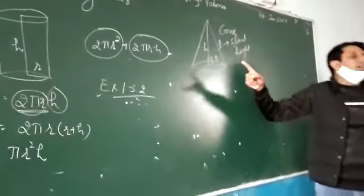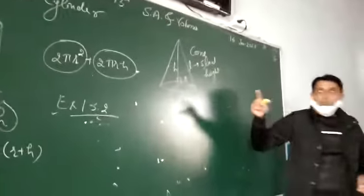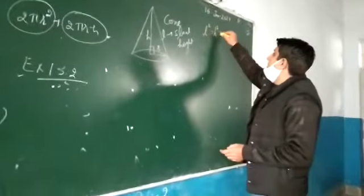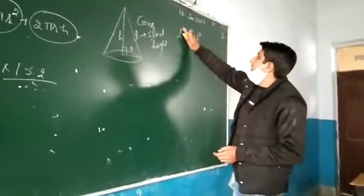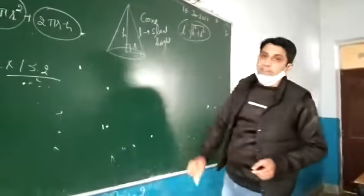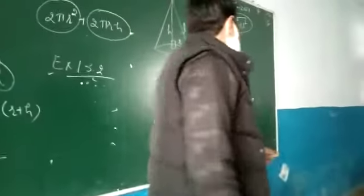The slant height. If we have radius and height, slant height works as a hypotenuse. Hypotenuse squared is equal to r² plus h². This is the formula to find the slant height. Okay.